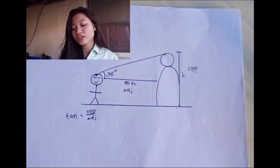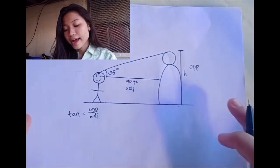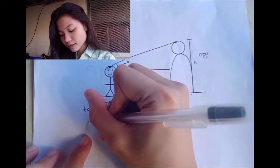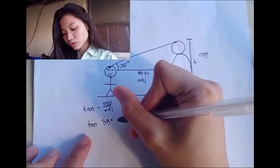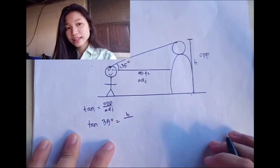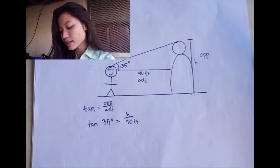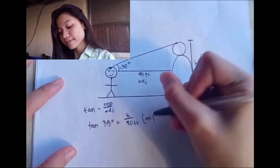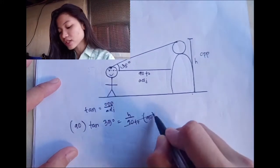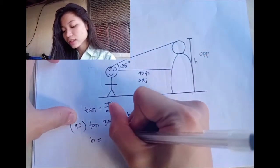With this, we know we should use the trigonometric function tangent, which is opposite over adjacent, to find the height of the statue. We can set up: tangent 35 degrees equals H over 90 feet. Solving by multiplying both sides by 90, we get H equals 90 feet multiplied by tangent 35 degrees.